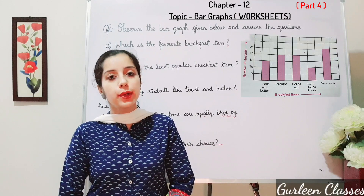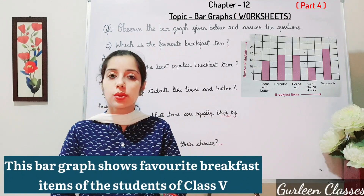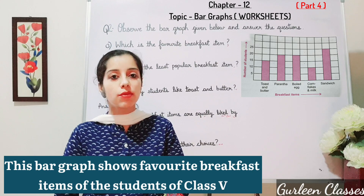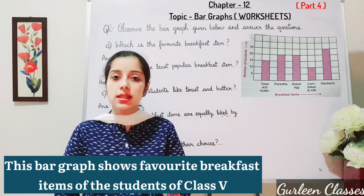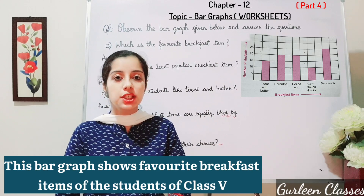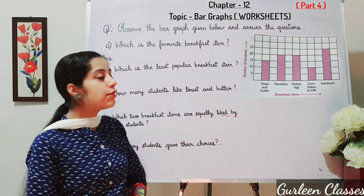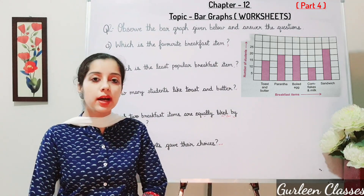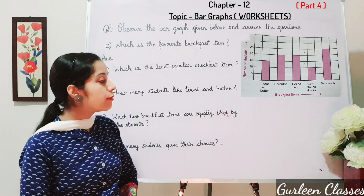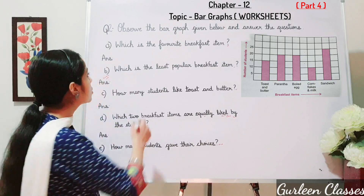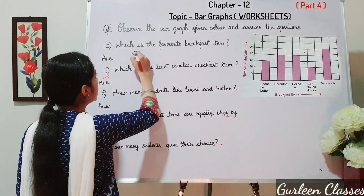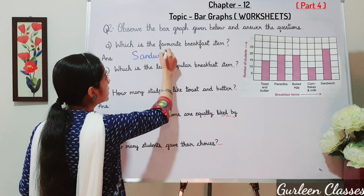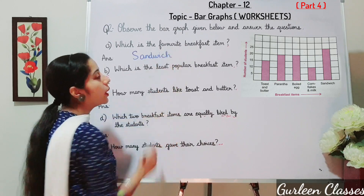Question number 2: this bar graph shows the favorite breakfast items of the students of class 5. Answer the following questions. Part A: which is the favorite breakfast item? By seeing the bar graph, the favorite breakfast item is sandwich, and 25 students like sandwich.